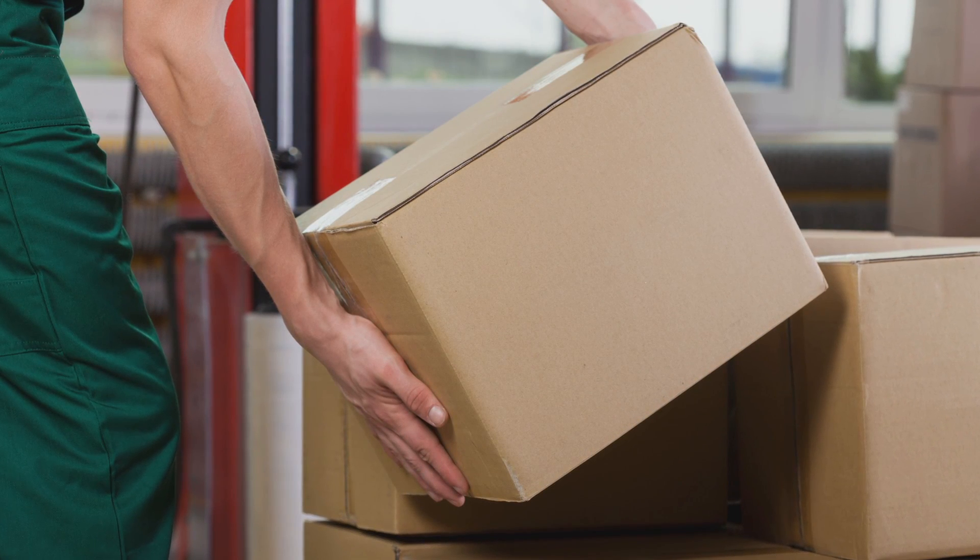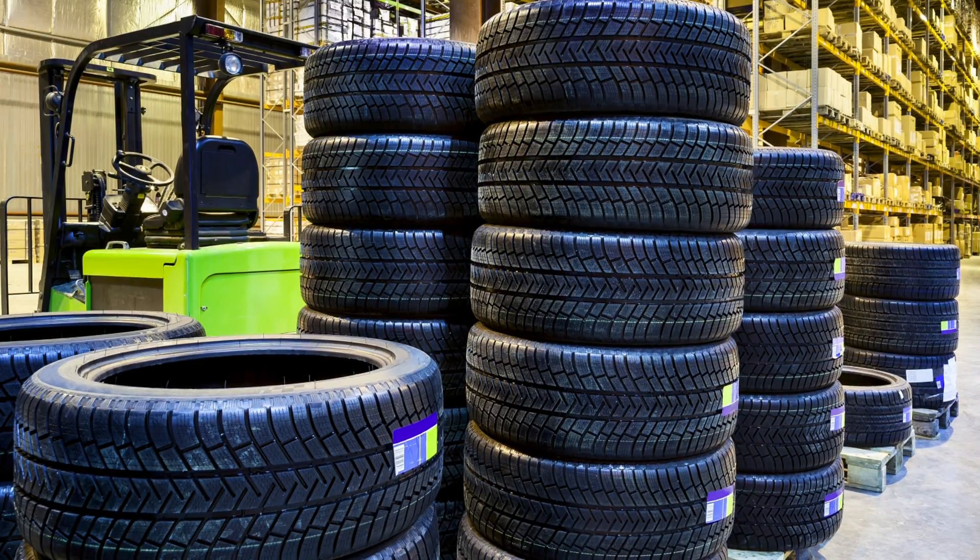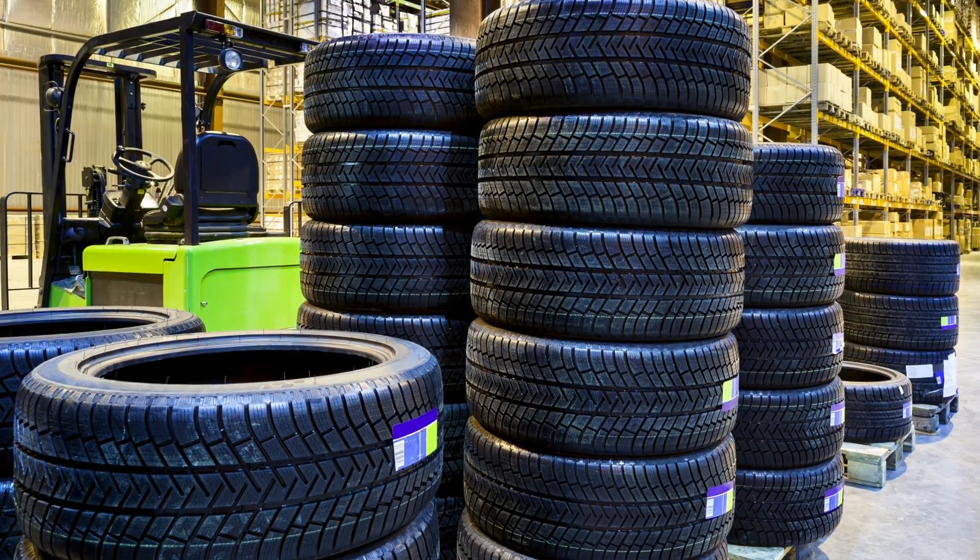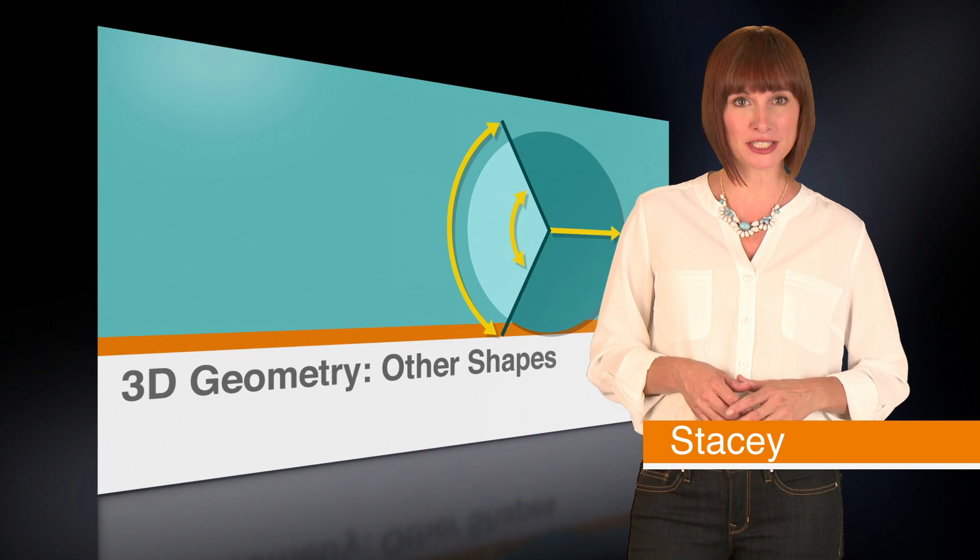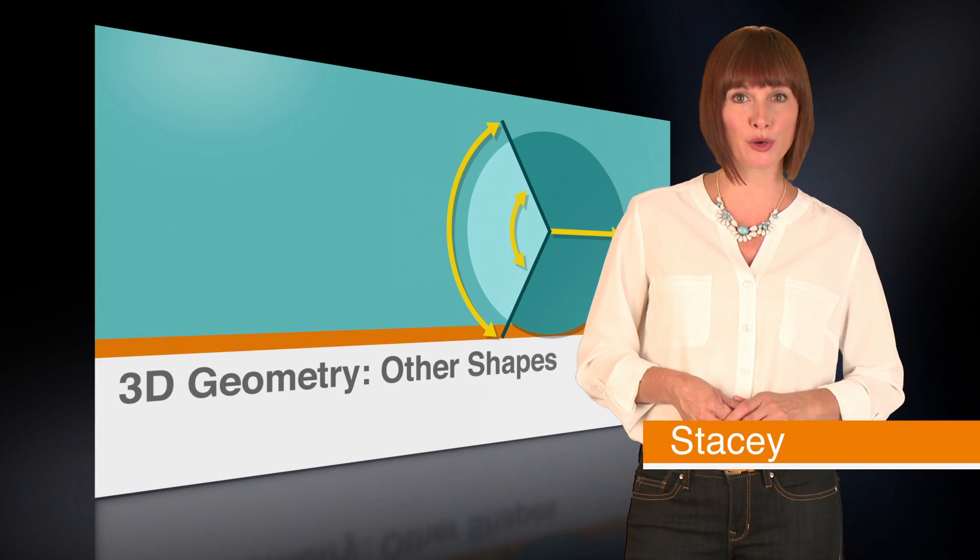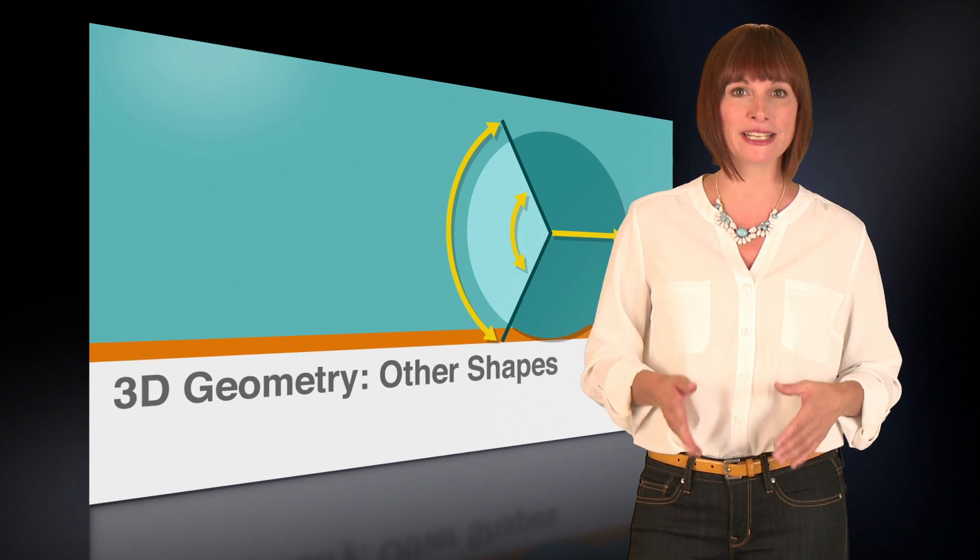When you think about three-dimensional shapes, rectangular boxes might be the first thing you picture, but there are all kinds of three-dimensional shapes. In this lesson, we're going to talk about how to find the volume and surface area of three-dimensional shapes with congruent bases, and later we'll go over how to calculate the volume of a right circular cylinder.